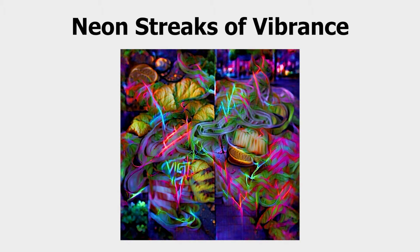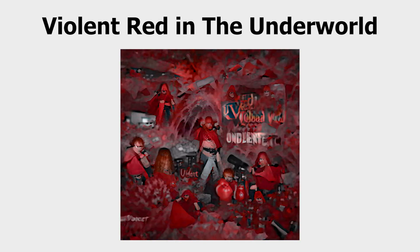The first one we're taking a look at is Neon Streaks of Vibrance. This one's pretty neat. I definitely like the colors — it's a bit crazy. I do think you can kind of tell it was generated by an AI just with how crazy it is, streaks all over the place, but I really do love the vibrance. Next up is Violent Red in the Underworld — pretty cool. I really do like when this network uses red; for some reason I think it always just makes it look really stunning.